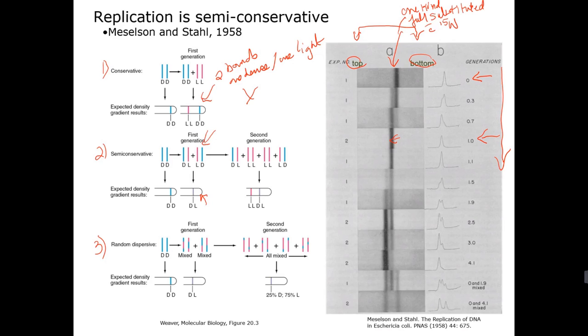And then if we go to the random dispersive, which it's hard to believe anyone could have thought this would be the case, but it actually predicts the same thing in terms of the first generation. It predicts that both the daughter molecules will be mixed to parental and newly synthesized strands. So again it would predict one species of lighter density than the original parental. So after one generation the data is actually looking consistent with both models. So what do you do? You actually keep going.